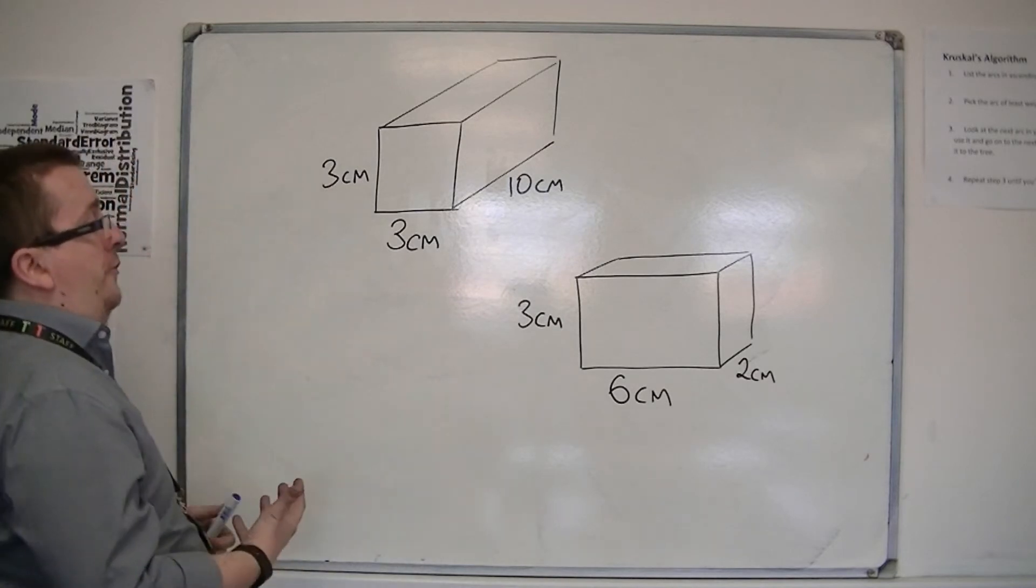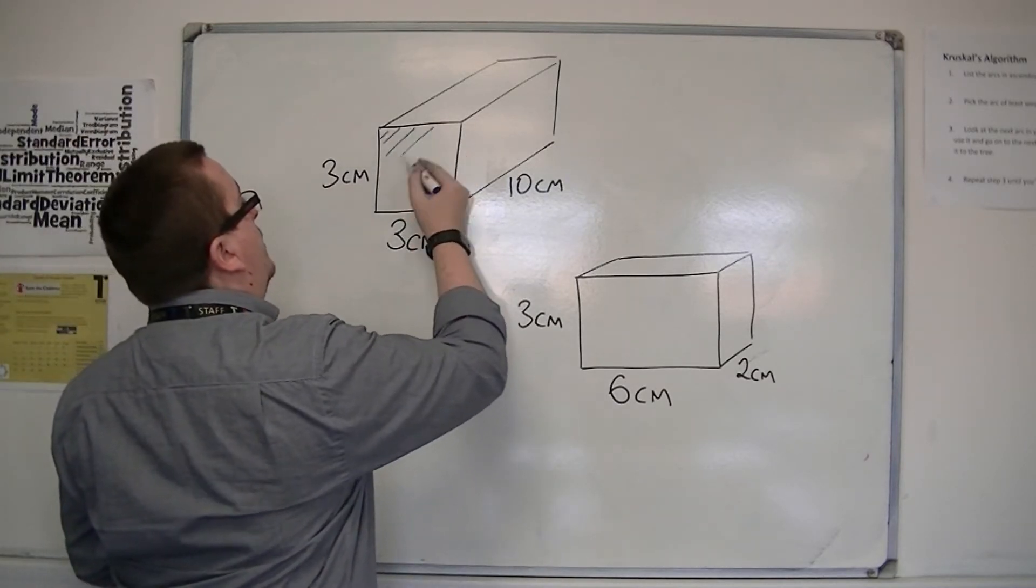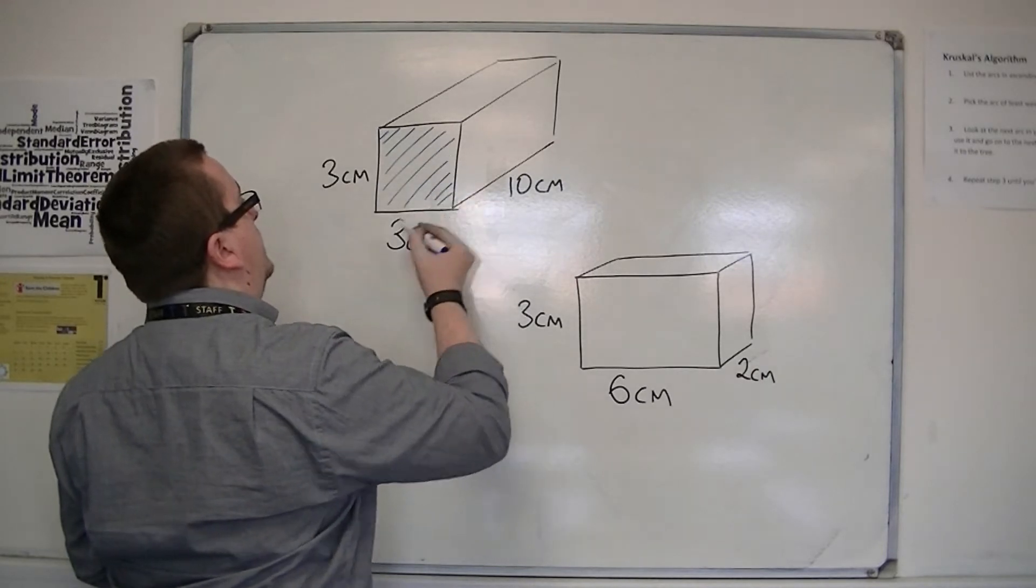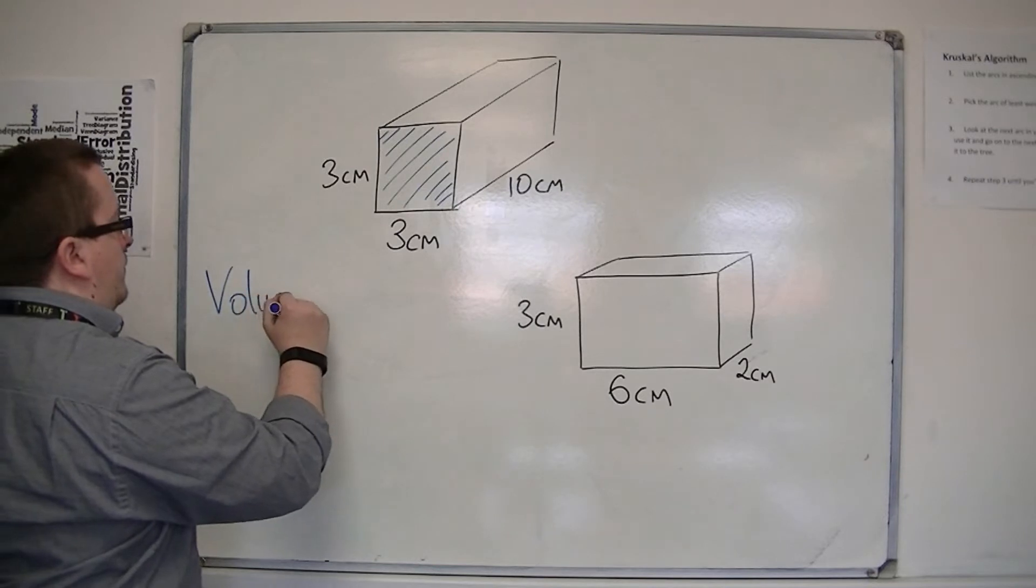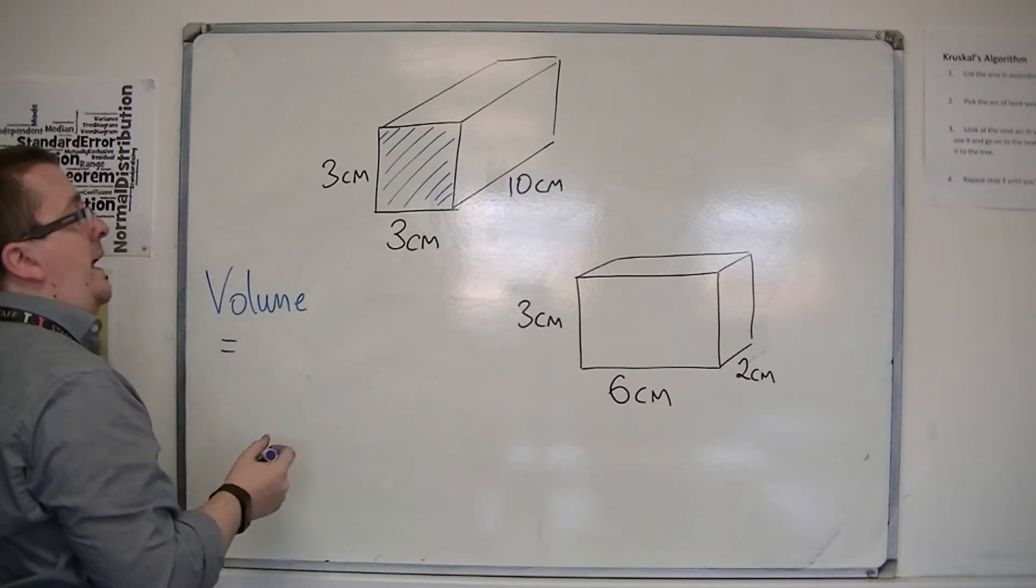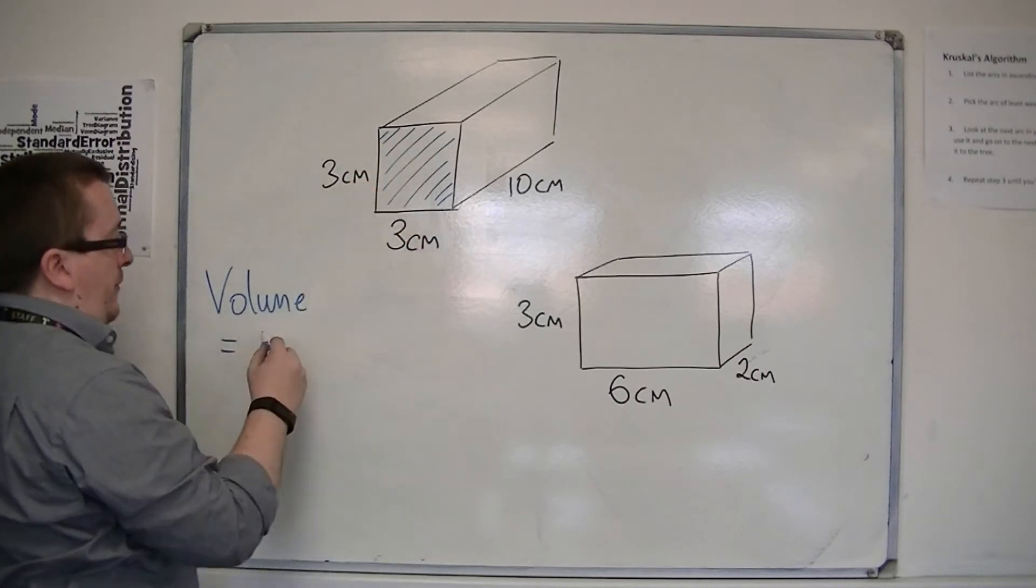So it starts off with trying to find the area of the front face. So the volume of this shape is equal to the area of the front face, three times three.